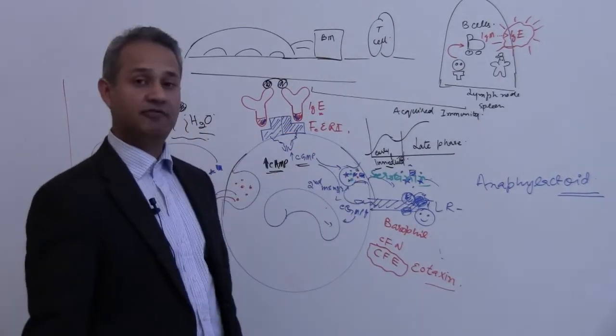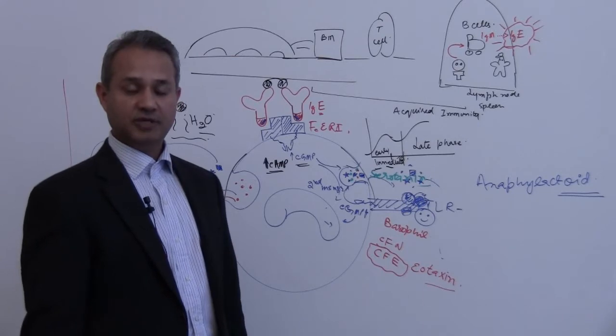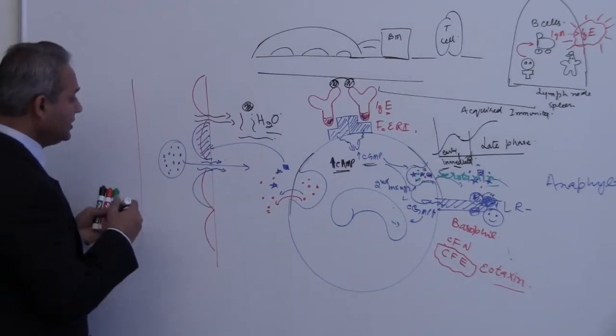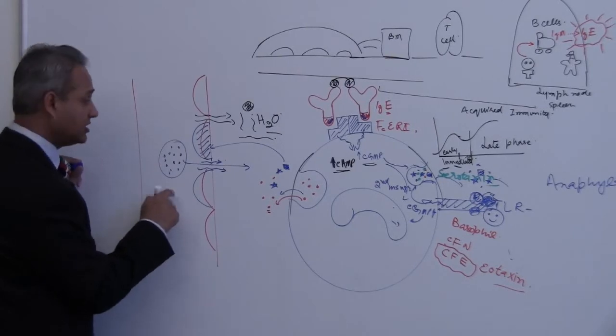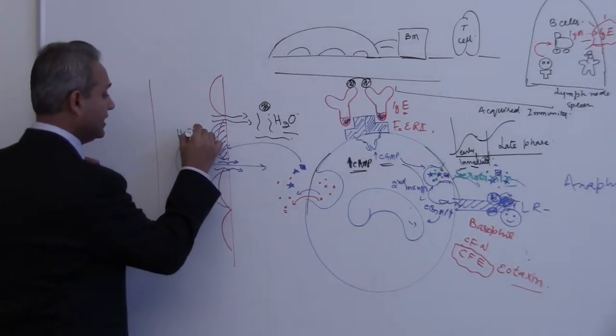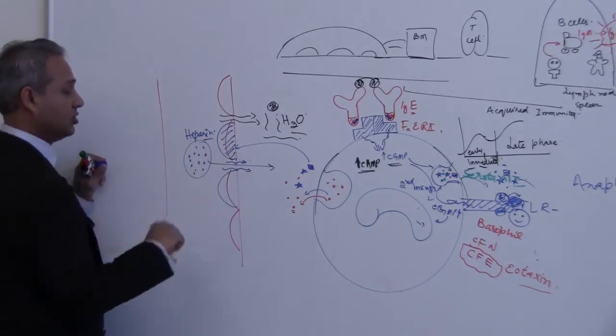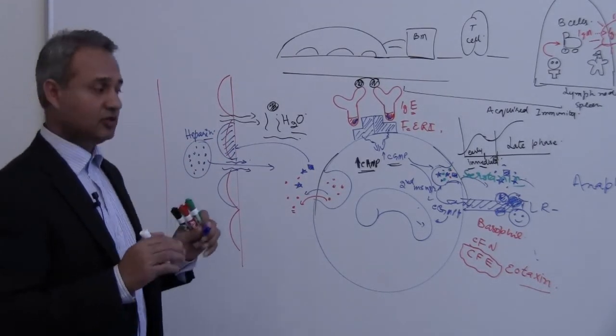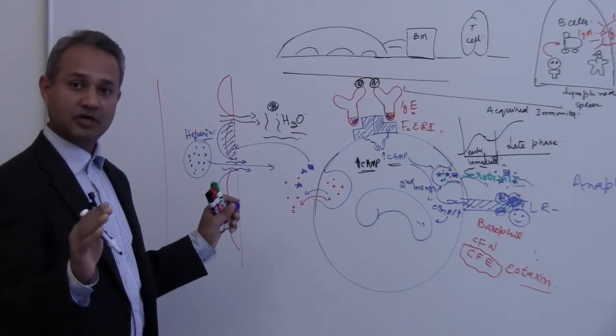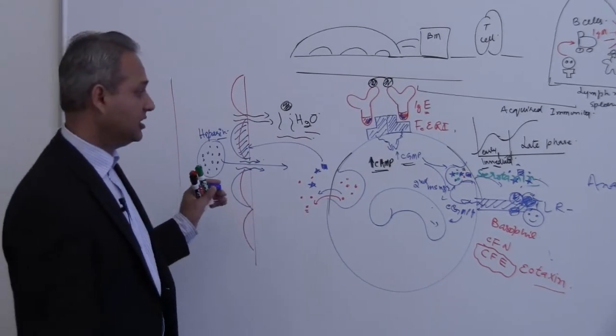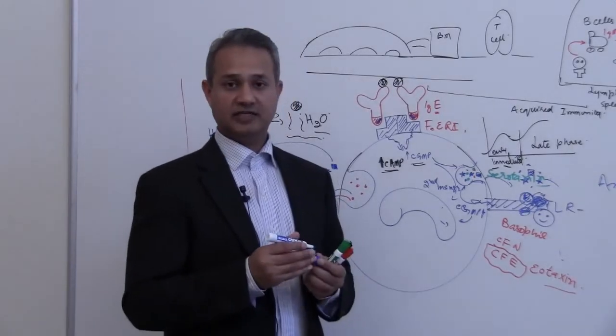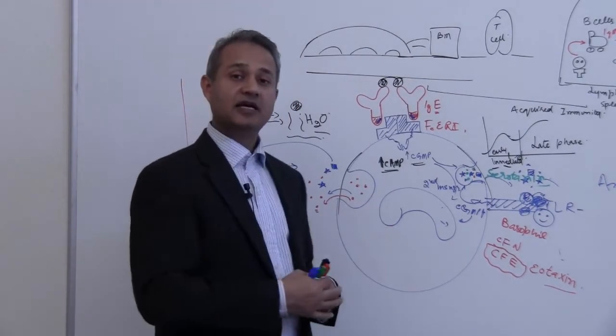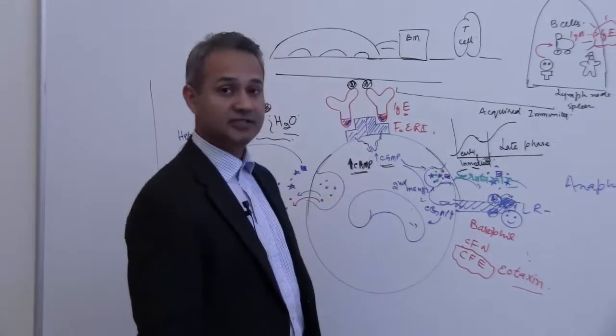This sort of wraps up our function with the basophil and the mast cell. One important thing for the basophil: they are sitting in the circulation and they have heparin as well which has strong action on the surrounding tissue and blood vessels. People who have asthma, people who have allergic reactions, these basophils and mast cells are there and type 1 hypersensitivity is due to these guys. Do you know that there can be other triggers?